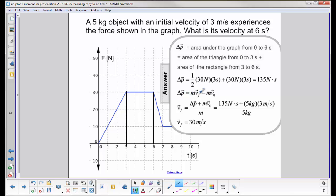Change in momentum is mv final minus mv initial. Now we want to find v final so we have to isolate this variable right here. So we add mv zero to both sides and divide by m.